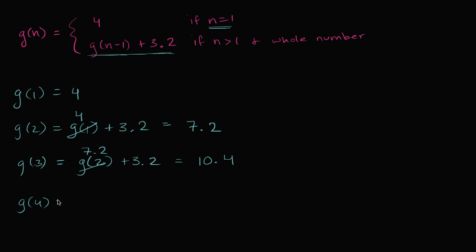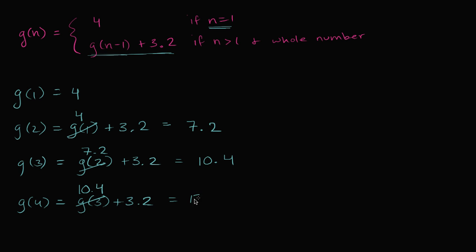And then g of four — we fall into this case again. This is going to be g of three plus 3.2. What is that going to be equal to? Well g of three we just figured out is 10.4. So 10.4 plus 3.2 is going to be 13.6.